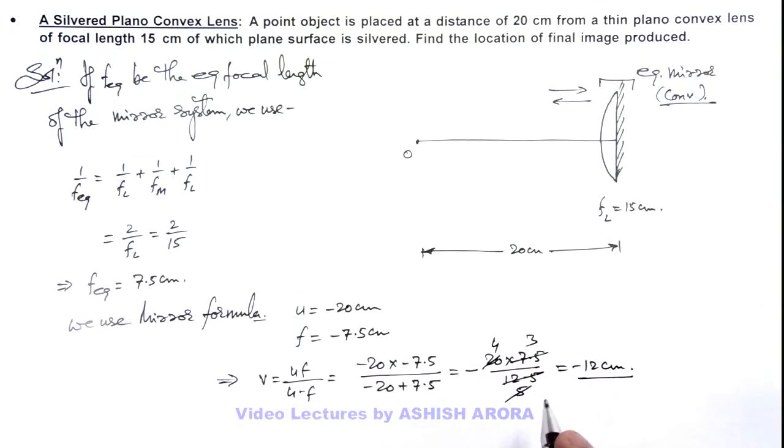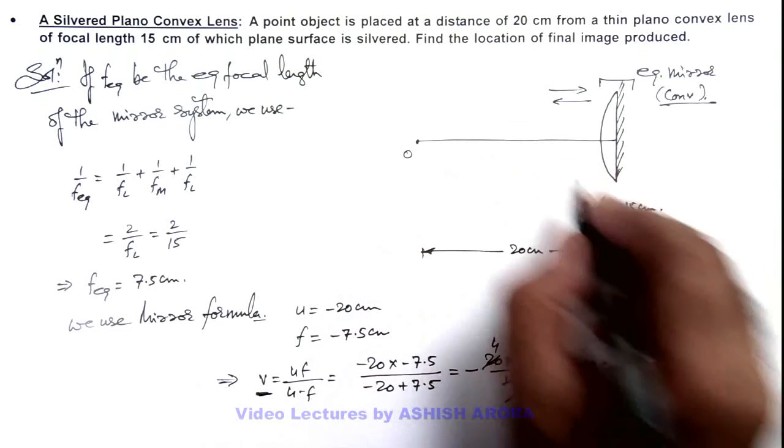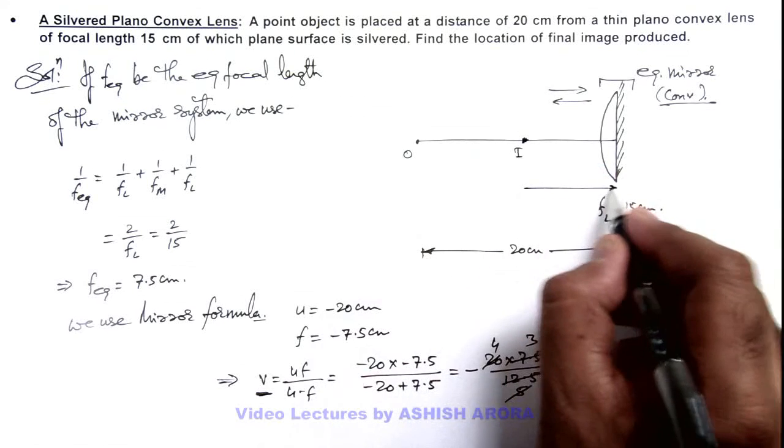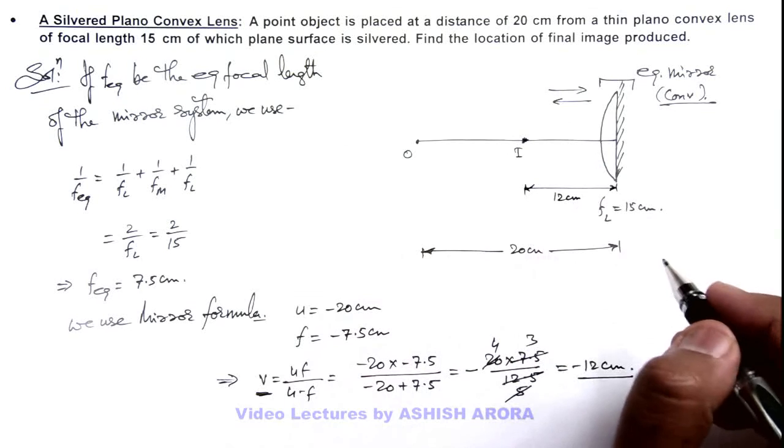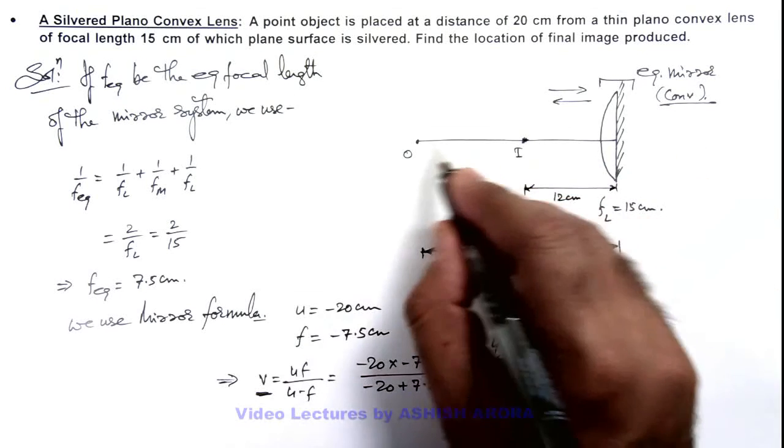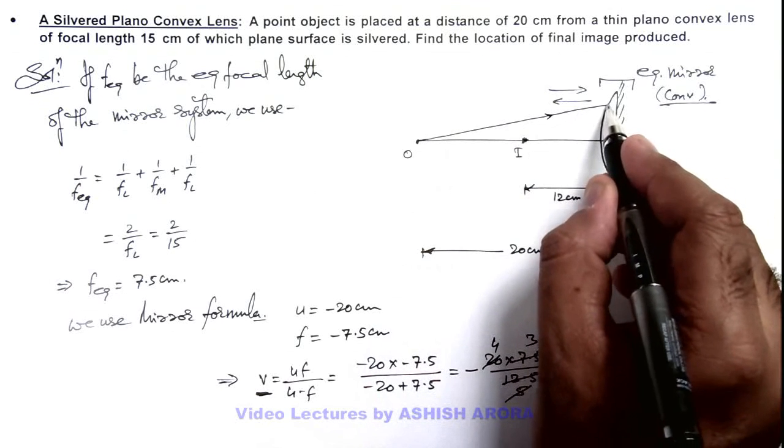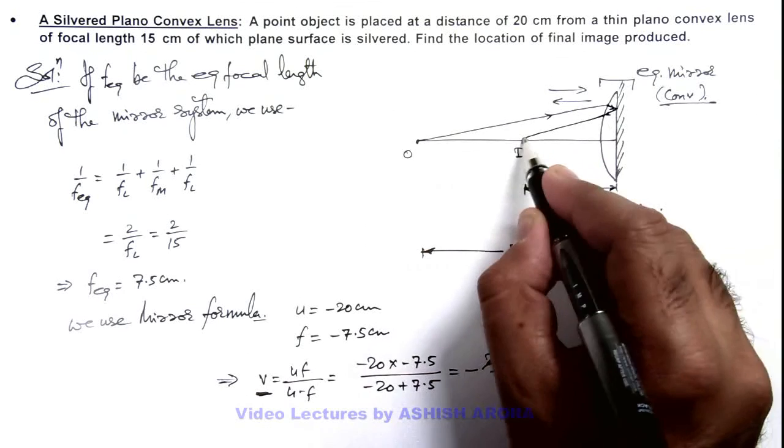So this gives us the final image location at distance 12 centimeter from the mirror to the left of it. That means somewhere here image is produced at a distance of 12 centimeter from this system.